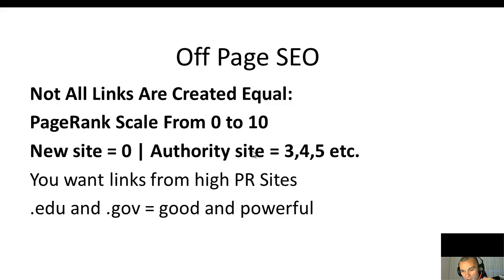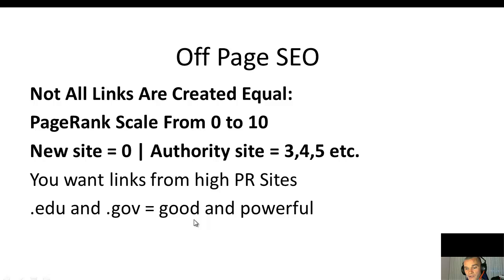You want to get links from high PageRank sites — the higher the better. For instance, if you have a few hundred backlinks from a PageRank 0 or 1 site, but only two or three backlinks from a PageRank 5 or 6 site, in Google's eyes the second option is much stronger. You also want links from .edu (educational) or .gov (government) sites — those are very powerful.